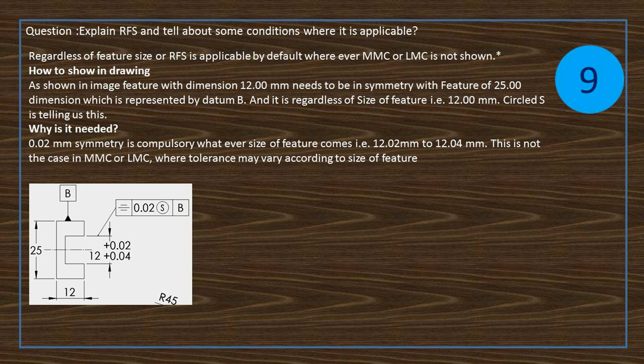Circled S is telling us this. Why is it needed? 0.02 mm symmetry is compulsory whatever size of feature comes, that is 12.02 mm to 12.04 mm. This is not the case in MMC or LMC, where tolerance may vary according to size of feature.